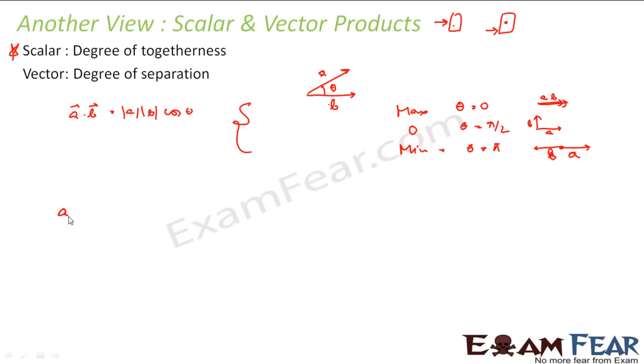When you talk about vector product, a cross b is nothing but a b sin theta and some direction. In this case, this guy is maximum when theta is pi by 2. So when they are separated by 90 degrees, this guy is maximum. When theta is 0, this guy is 0.